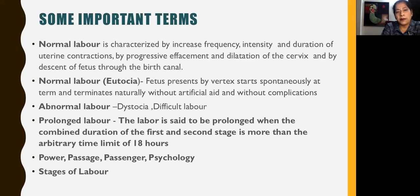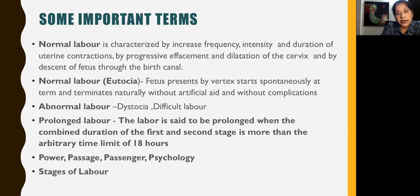Let us look at some important terms. Normal labour is characterized by increased frequency and intensity of uterine contractions, followed by progressive effacement and dilatation of cervix, which helps in descent of the fetus through the birth canal. It is said to be normal when the fetus presents by vertex, labour starts spontaneously at term, and terminates naturally without artificial aid and without complications. Any deviation from this is abnormal labour — if it has been artificially induced or if there is any complication. Other terms used are dystocia and difficult labour.